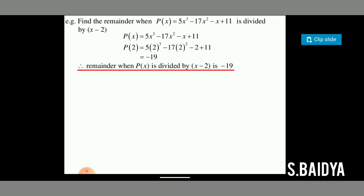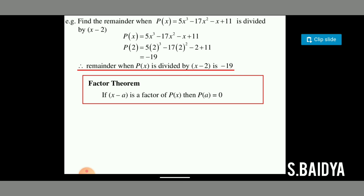When the remainder is 0, that gives us another theorem called the factor theorem. The factor theorem states: if x minus a is a factor of p(x), then p(a) = 0. Conversely, if the remainder equals 0, then x minus a is a factor of p(x).